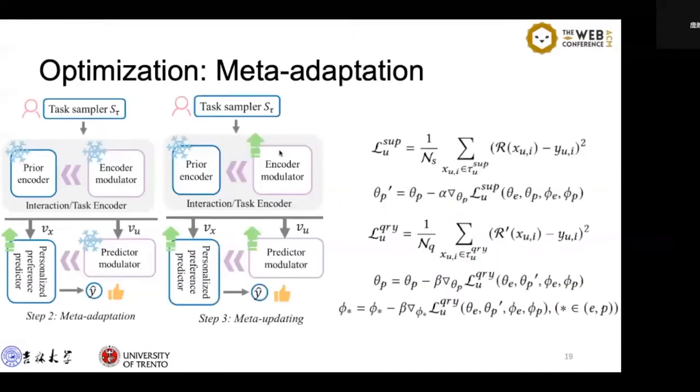During meta-training, meta-adaptation and meta-update take turns. The data is sampled by user and divided into support set and query set. The weights and biases in the encoder modulator are initialized to 1 and 0, respectively.